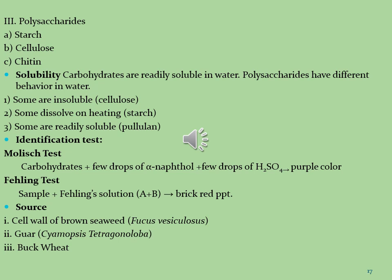The first test is the Molisch test, which is very common. A sample of carbohydrates is treated with a few drops of alpha-naphthol and a few drops of sulfuric acid; a purple color indicates the presence of carbohydrates. The second test is Fehling's test: a sample of carbohydrates is added to Fehling's solutions A and B, which converts to brick red precipitates, indicating carbohydrates. Common sources from which carbohydrates are extracted include the cell wall of brown seaweed, guar, and buckwheat.